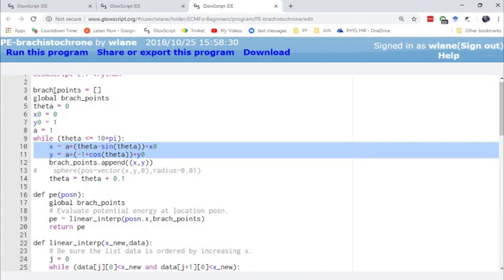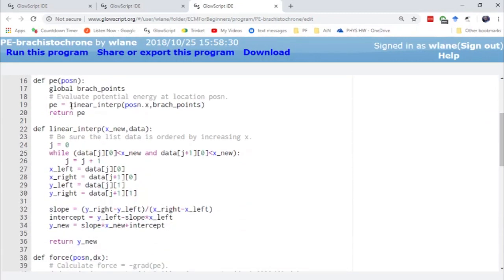But the shortest distance, or excuse me, the shortest time function is called the brachistochrone. And so that's why I'm storing the information about the cycloid in brach points here. So this is going to give us the points along this trajectory. Now, because it's a parametrized function, I can't just put in an x and get out a y. I have to generate the points ahead of time. And then when I want to calculate my potential energy, I'm going to linearly interpolate between those points.